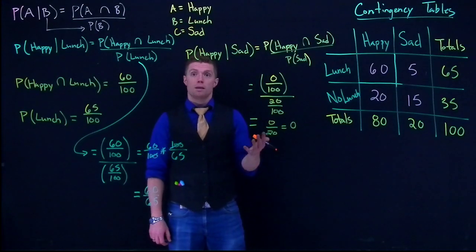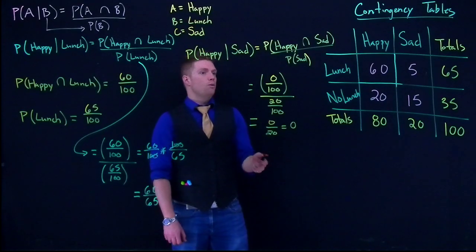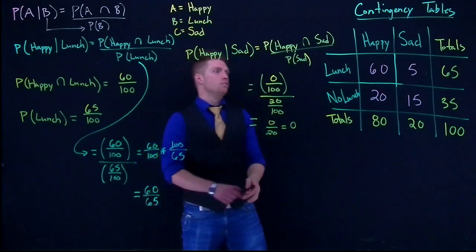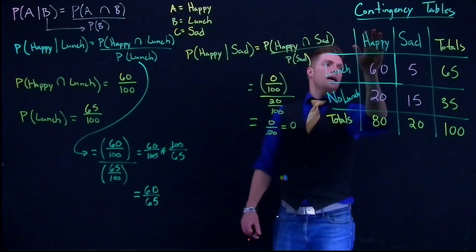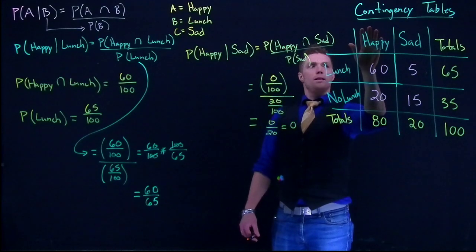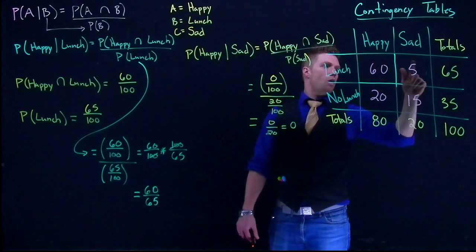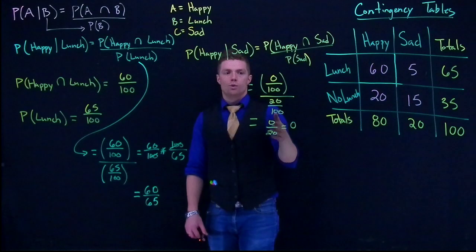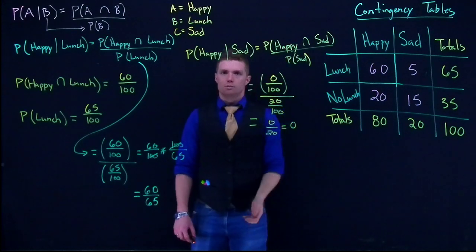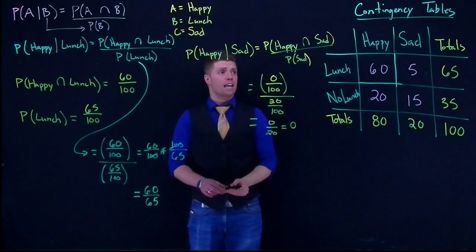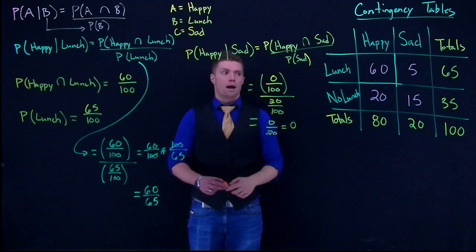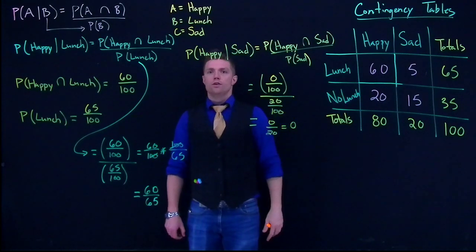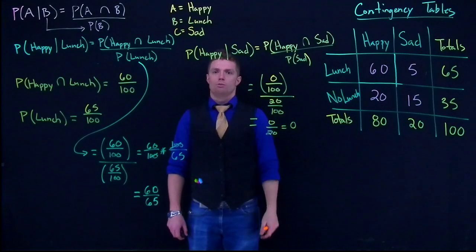Remember: if you take the conditional probability of mutually exclusive events, the probability is zero. We can also use the shortcut — given that somebody is sad, what's the probability they're happy? There are no options in that column that are happy, so it drops to zero. That is how we use our contingency table to figure out conditional probabilities.